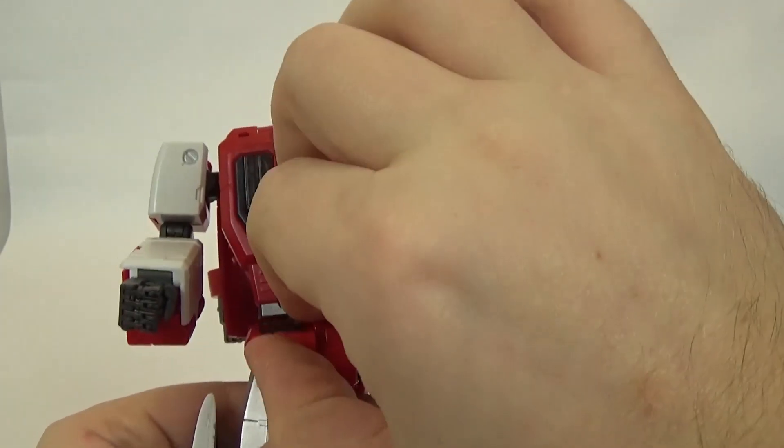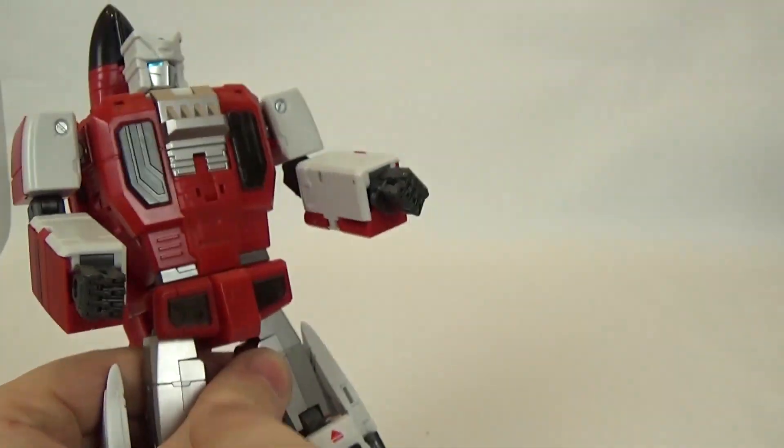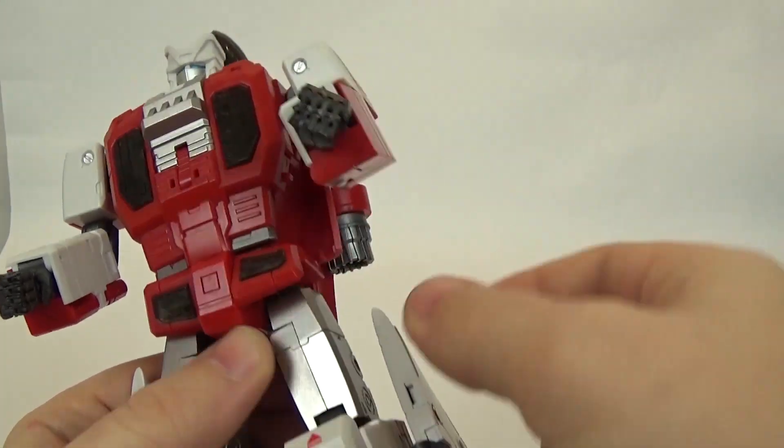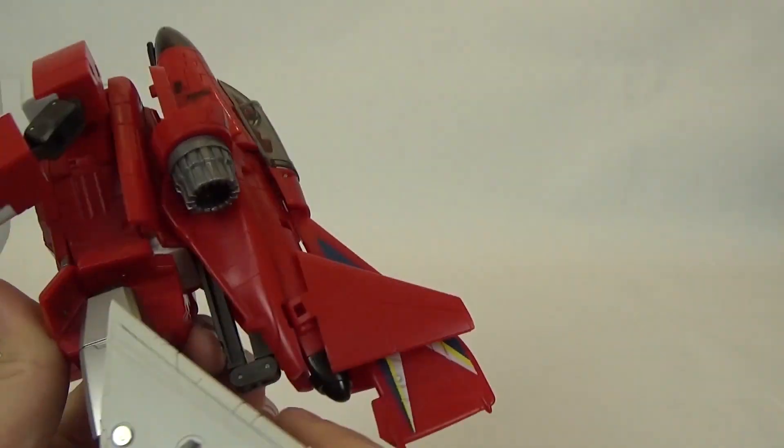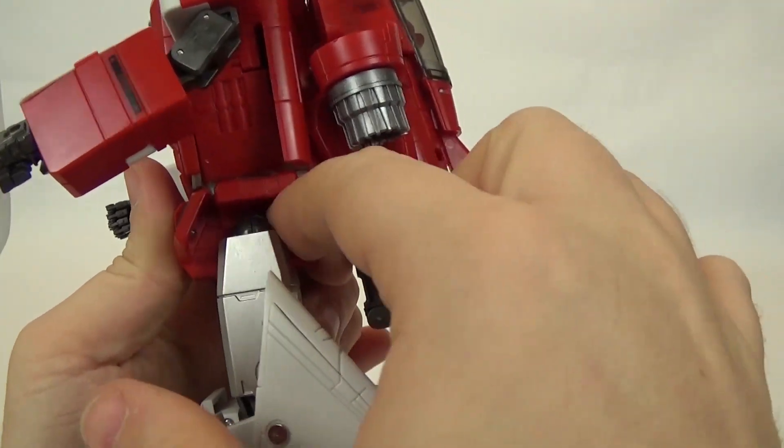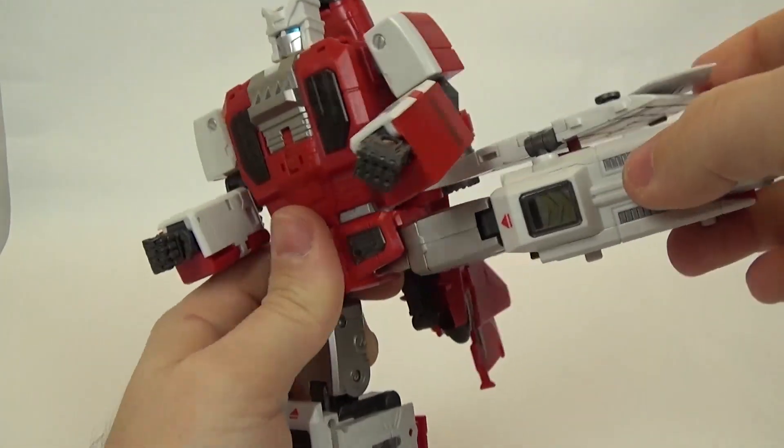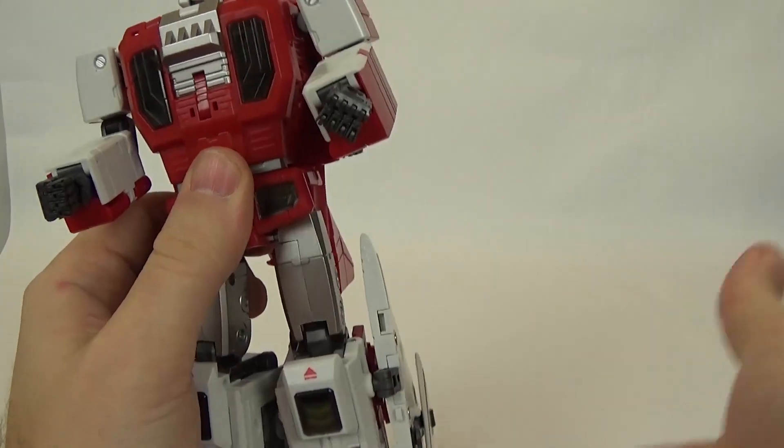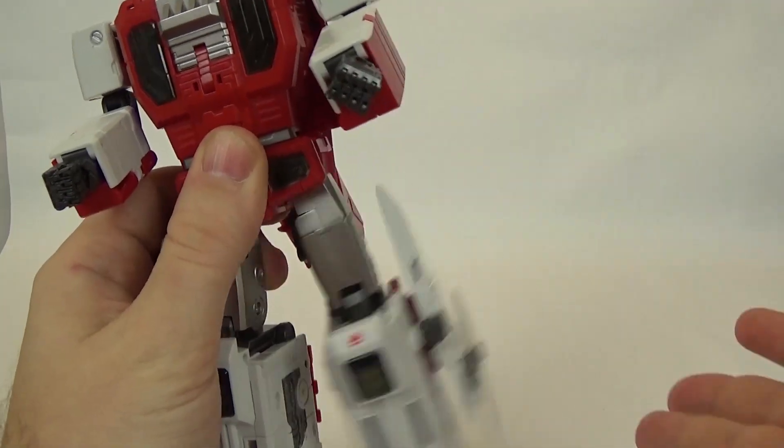You get a waist swivel, which does work very well. You get these hip skirts that move out of the way a little bit if you need to. This one is a little bit loose. This one is loose, too. But they're hip skirts, so that doesn't bother me too much. For whatever reason, you can't go backwards with this leg. It won't allow you right here.